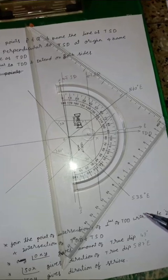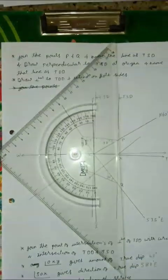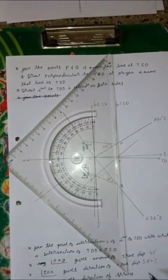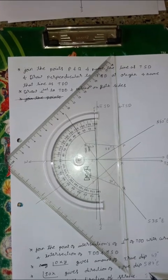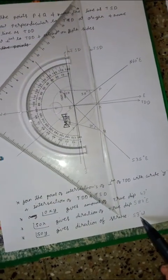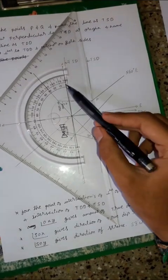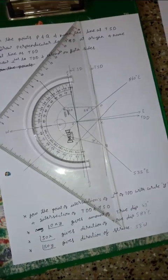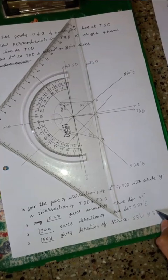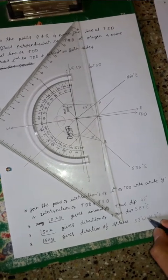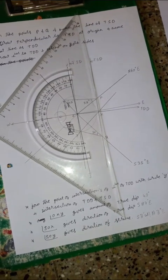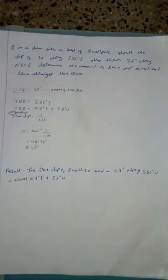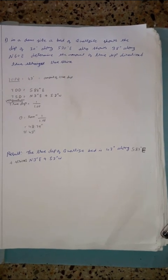Now we want to measure angle SOX for the strike. Angle SOX is found to be 3 degrees. This 3 degrees is in the south-west quadrant, so write it as south 3 degrees west. In the north-east quadrant also it is 3 degrees, so write it as north 3 degrees east. Write the result: the true dip of the rock bed is 43 degrees along south 87 degrees east, and it strikes north 3 degrees east and south 3 degrees west.